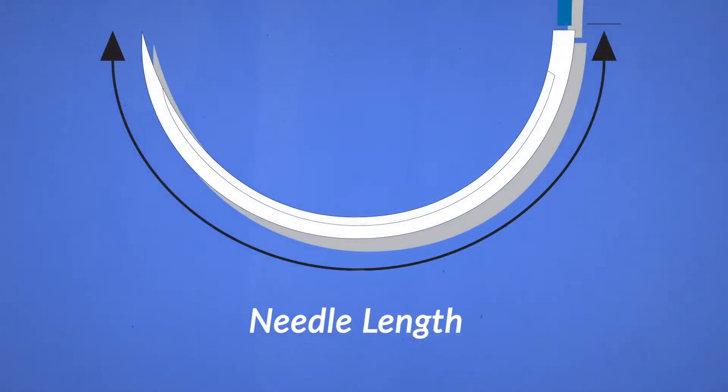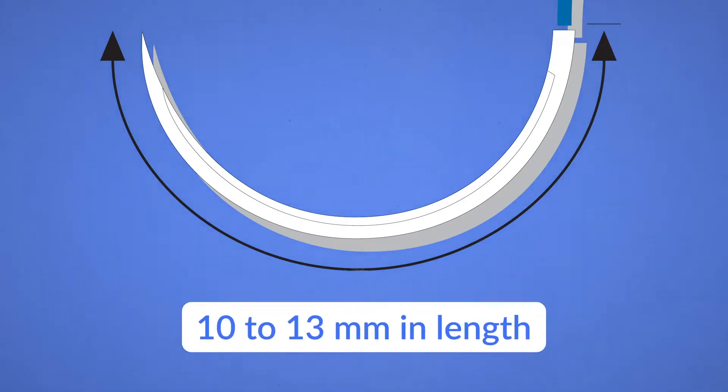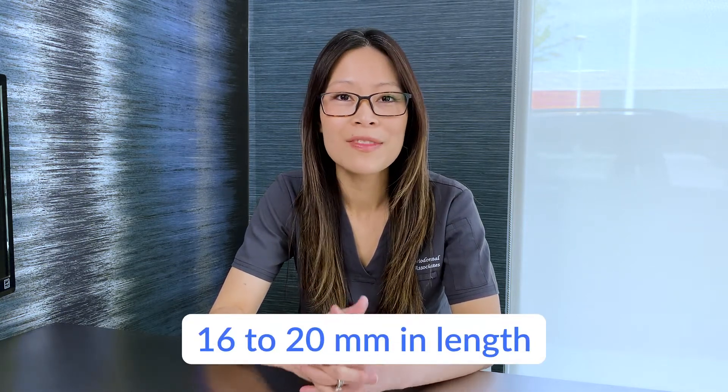First, the needle size denotes the length of the needle. Smaller needles are between 10 to 13 millimeters in length and are used for smaller wounds or more delicate tissues. If you're using it for larger wounds or more resistant soft tissue, you might opt for a bigger needle, either 16 to 20 millimeters long. Longer needles also have a larger diameter and they are easier to handle. However, when the size is larger, the puncture wound it creates in the tissue will also be larger. If you are operating on smaller and more delicate tissues, you may opt for a smaller needle size.